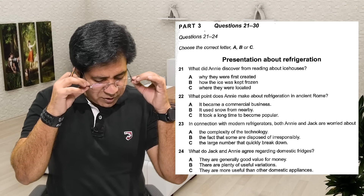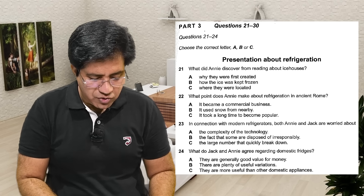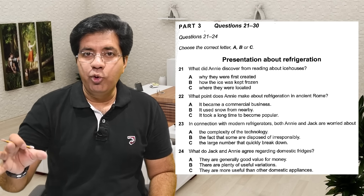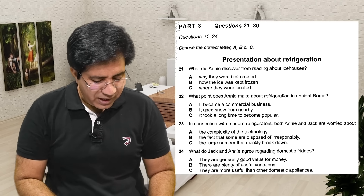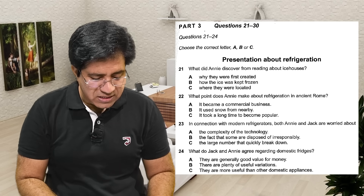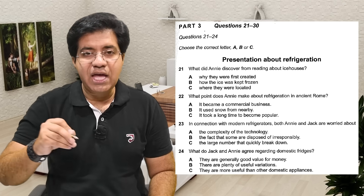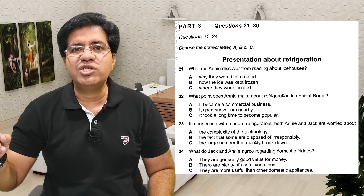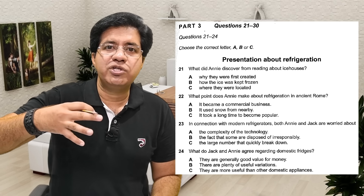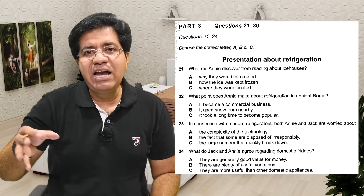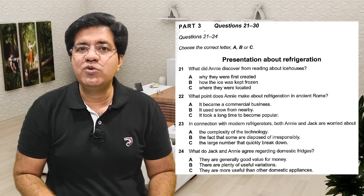Question 22: 'What point does Annie make about refrigeration in ancient Rome?' Annie is going to make a point about refrigeration in ancient Rome. Option A: 'It became a commercial business' — underline 'commercial business.' If the audio says refrigeration in ancient Rome became a commercial business, that's correct. But if they say it could not reach commercial level, or add 'not,' or use words like 'I thought' or 'I expected,' those signal wrong answers.